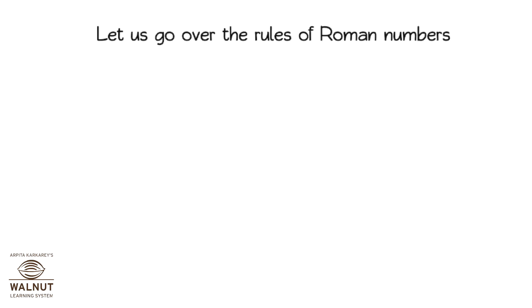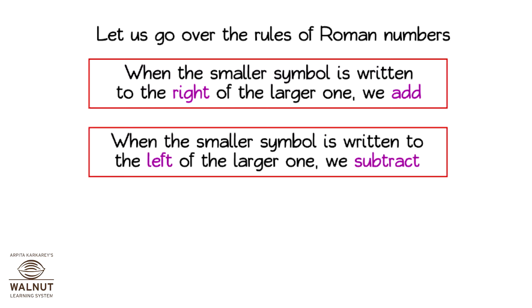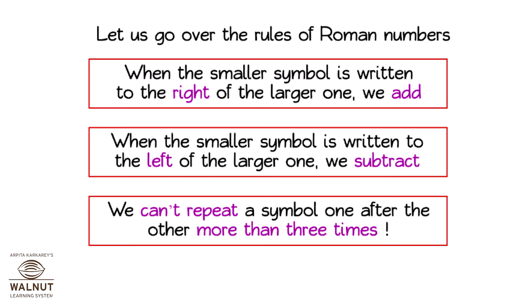Let us go over the rules of Roman numerals. When the smallest symbol is written to the right of the larger one, we add. When the smallest symbol is written to the left of the larger one, we subtract. We can't repeat a symbol one after the other more than three times.